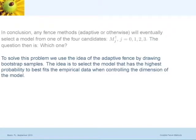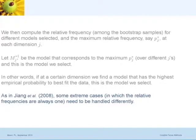The question remains: which one? Because you want to choose one model, not all four. To solve this problem, we use the idea of the adaptive fence. You calculate the empirical probability that each model is selected. Whoever has the highest empirical probability — that's the lucky guy. With four models, you calculate the empirical probability for each, and whichever has the highest is the model you select. This idea is very similar to the adaptive fence. This tells you how to compute this empirical probability — you can also read the 2008 paper, which illustrates this idea.